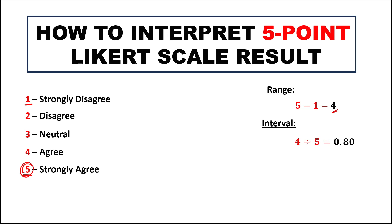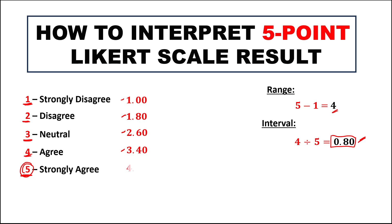Then to create the scale, since 1 is Strongly Disagree, this starts at 1.00. For Disagree, since the interval is 0.80, we add 0.80 plus 1, so this is 1.80. For Neutral, 1.80 plus 0.80 gives 2.60. For Agree, 2.60 plus 0.80 gives 3.40. And for Strongly Agree, 3.40 plus 0.80 gives 4.20. So these are the lower limits.